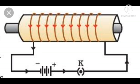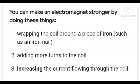Now if you want to increase the strength of an electromagnet, there are certain ways. Number 1: wrapping the coil around a piece of iron such as an iron nail. Number 2: adding more turns to the coil. Number 3: increasing the current flowing through the coil. These are the ways by which we can increase the strength of electromagnets.